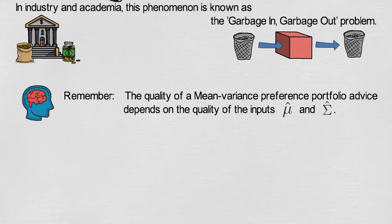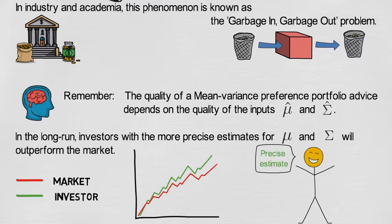Remember the quality of a mean variance preference portfolio advice depends on the quality of the inputs mu hat and sigma hat. In the long run investors with the more precise estimates for mu and sigma will outperform the market.